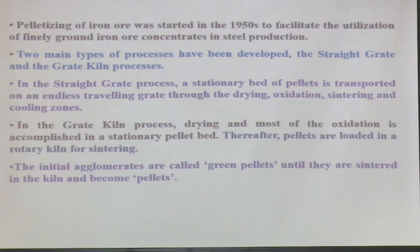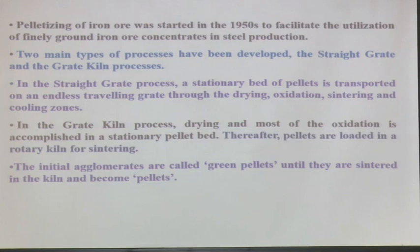In the straight grate process, a stationary bed of pellets is transported on an endless travelling grate through the drying, oxidation, sintering and cooling zones — that means how you heat them up and how you cool them. Any metallurgist knows that the heating cycle controls the internal microstructure of the material. Here also, if I heat them quickly the water will go out immediately and I will have fragmented particles again. So there has to be proper control of the heating and cooling cycle.